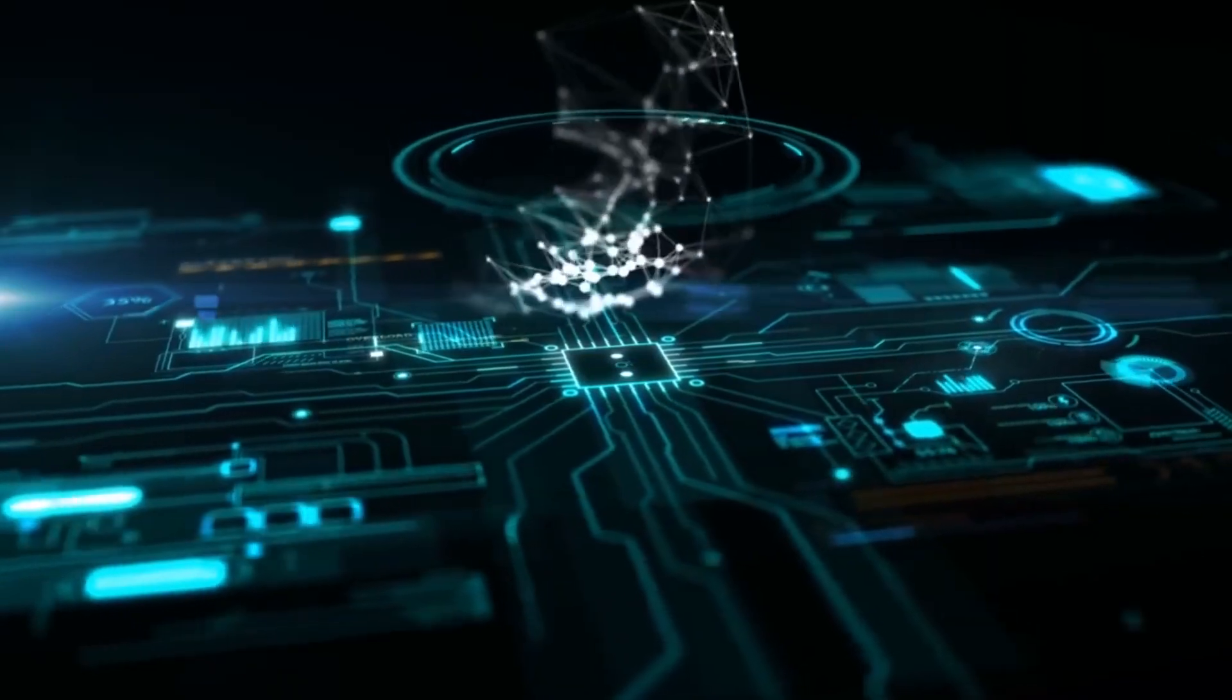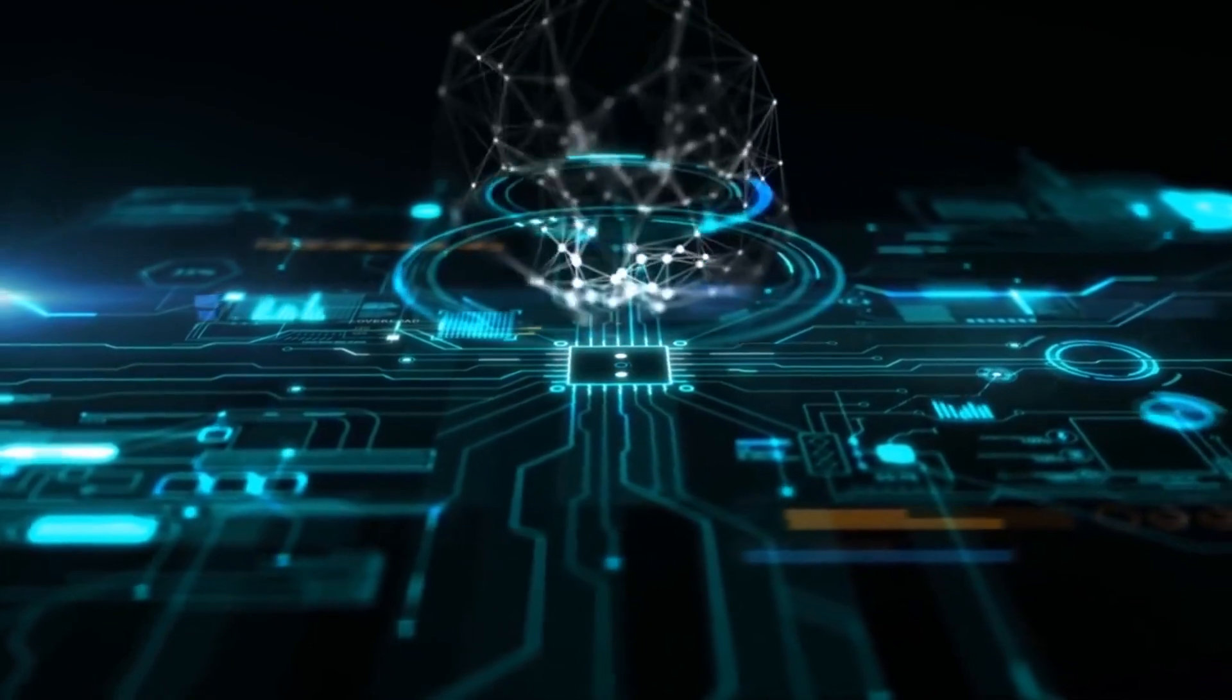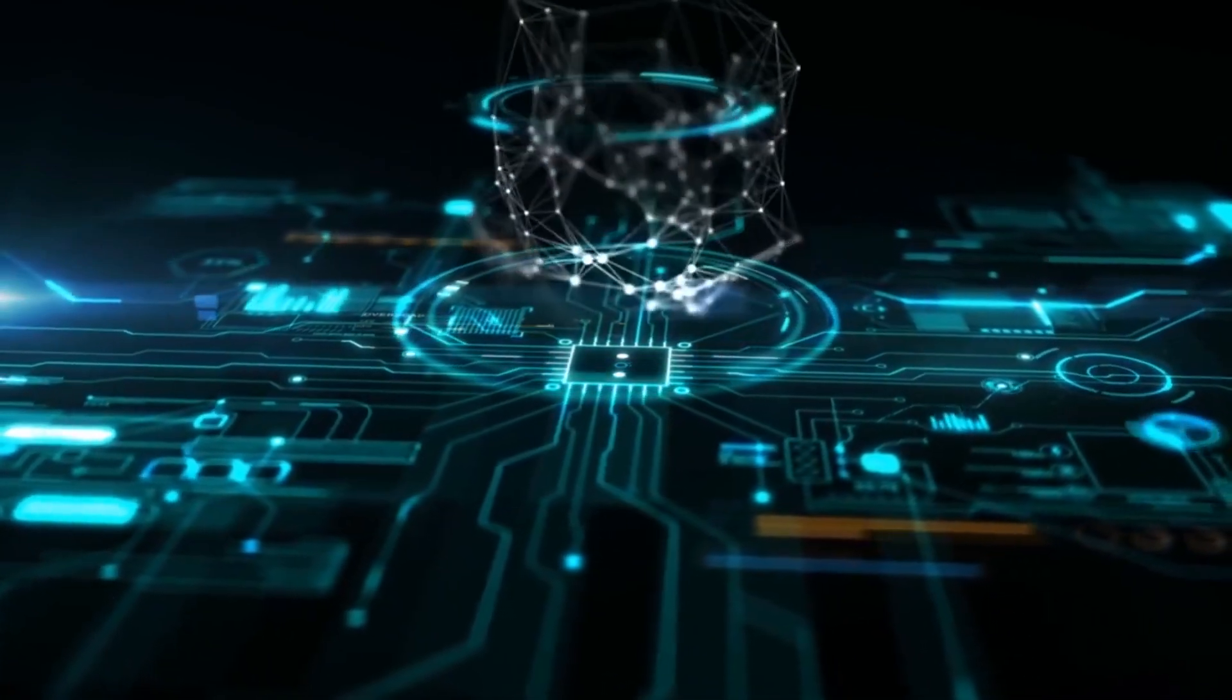The five key features of Web 3.0 are ubiquity, semantic web, artificial intelligence, spatial web and 3D graphics, and decentralization through blockchain.